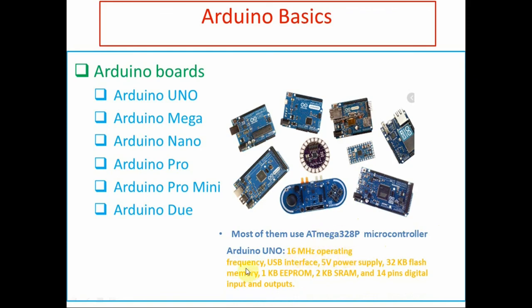Arduino Uno has ATmega328P microcontroller, 16 megahertz operating frequency, USB interface, 5 volt power supply, 32 kilobytes of flash memory, 1 kilobyte of EEPROM, 2 kilobytes of SRAM, and 14 pins digital input and outputs. All of these features we will discuss in the next upcoming videos.